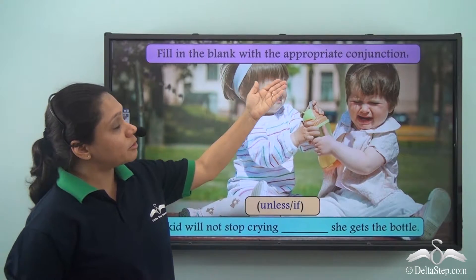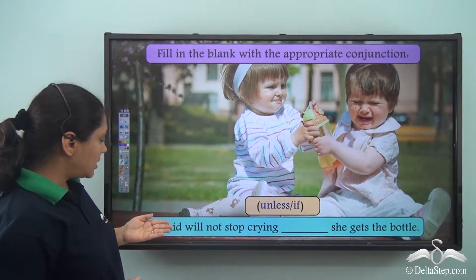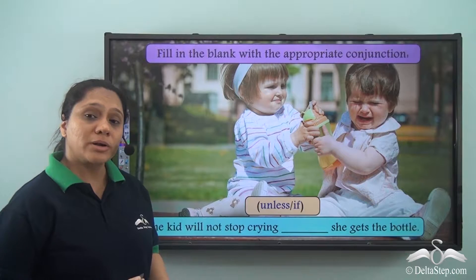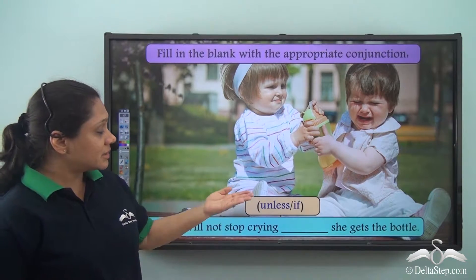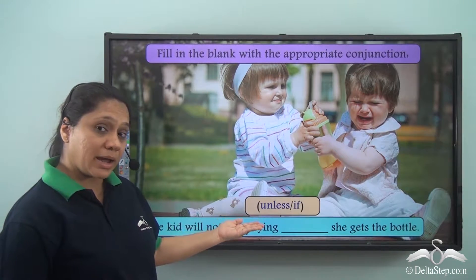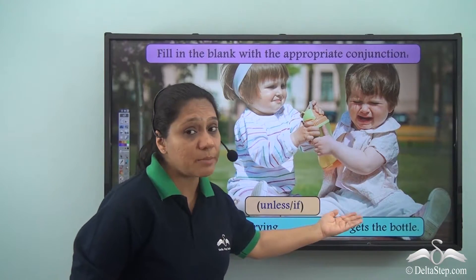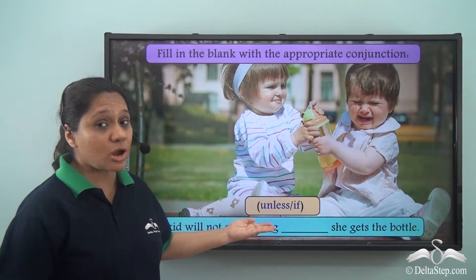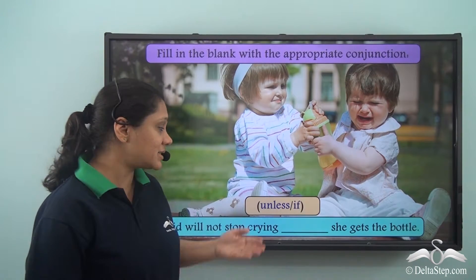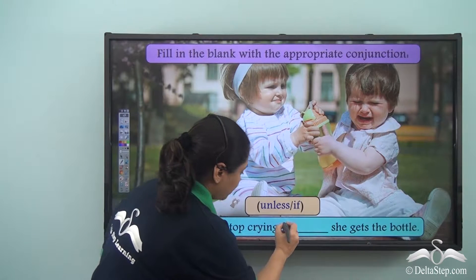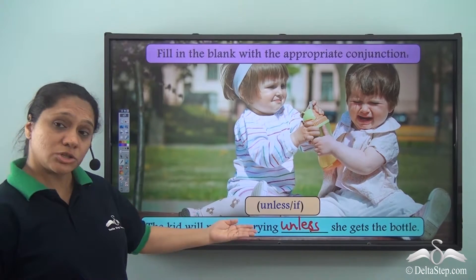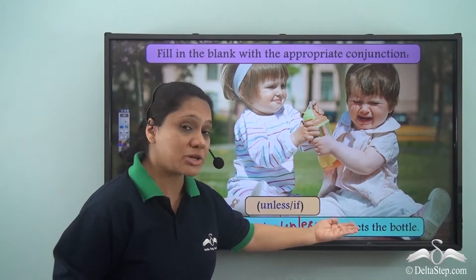Fill in the blank with the appropriate conjunction: 'The kid will not stop crying _____ she gets the bottle.' The options are 'unless' or 'if.' Can we say 'the kid will not stop crying if she gets the bottle'? No — the kid will not stop crying as long as she does not get the bottle. So the correct answer is 'unless': The kid will not stop crying unless she gets the bottle.